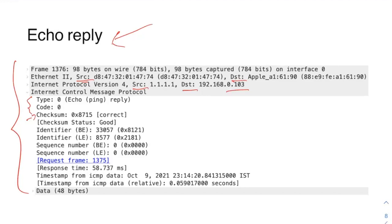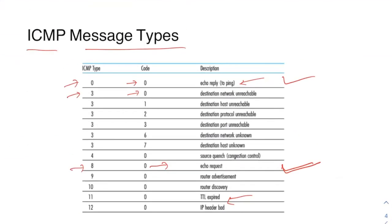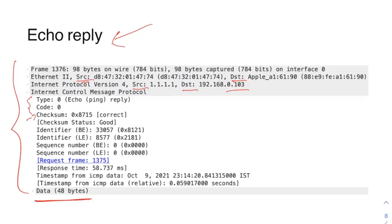In the echo reply, the ICMP protocol shows type 0, code 0 — that's what happens in echo reply — and the checksum is present. I haven't expanded the IP header here, but if you did expand it in Wireshark you would also see all the fields like version, header, TTL, protocol, etc. I focused on the ICMP header part only.